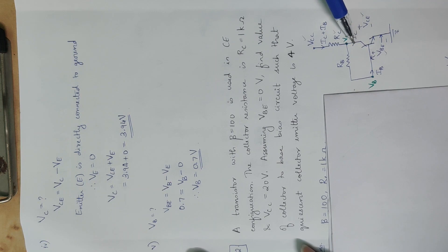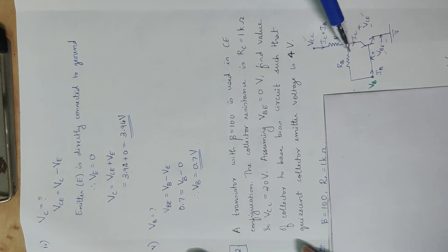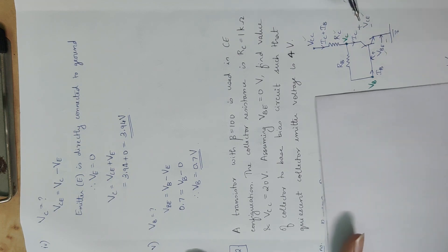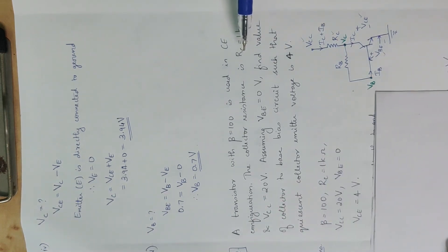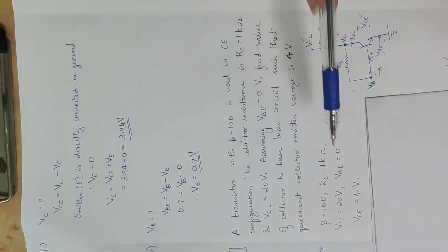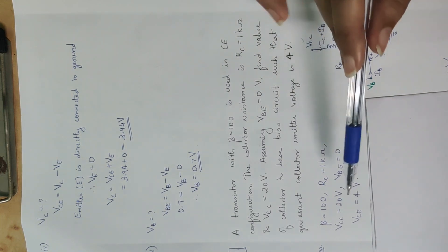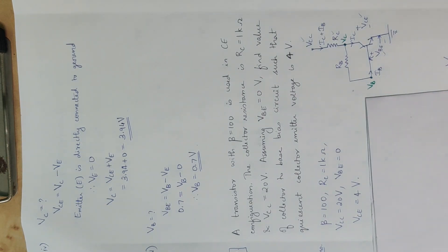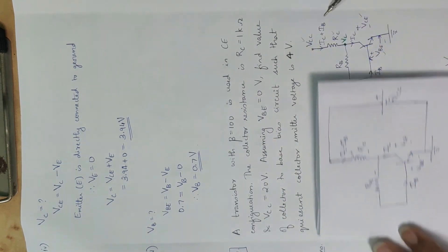Let's talk about the theory. In the collector, the current IC enters. In the base, the current IB enters. Through RC, the current IC plus IB will flow. The circuit has VCE and VBE. The given data: beta is equal to 100, RC, VCC, VBE, and VCE.